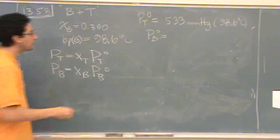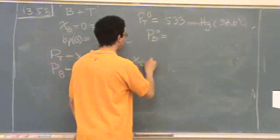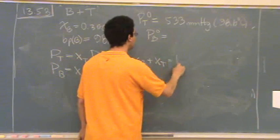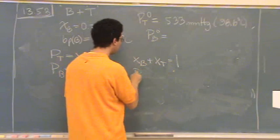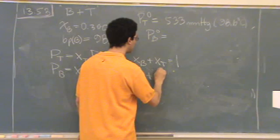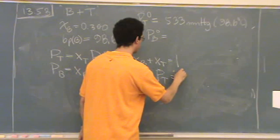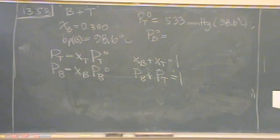We've got those two. We've got Xb plus Xt equals 1. Sum of mole fractions equals 1. Pb plus Pt equals Pt naught.